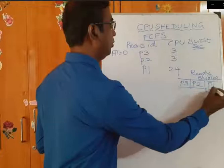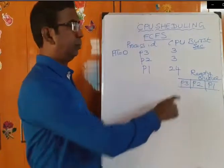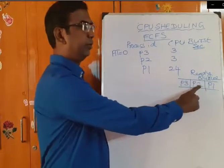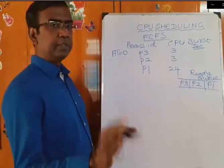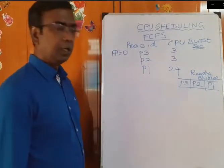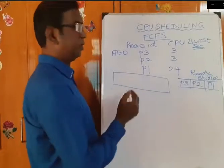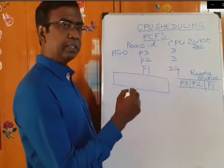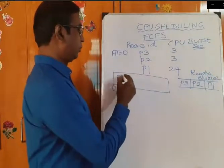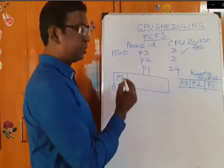Now processes are available in the ready queue in this order: P3 first, P2 second, and P1 third. Same CPU burst time, same number of processes, arrival time also equal to 0. Now we have to draw the Gantt chart for this CPU scheduling algorithm. First, P3 will enter into the CPU at start time 0, and P3's CPU burst time is 3 seconds, so it will complete its job at 3 seconds.